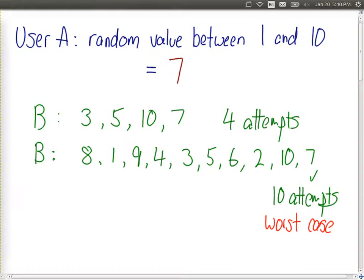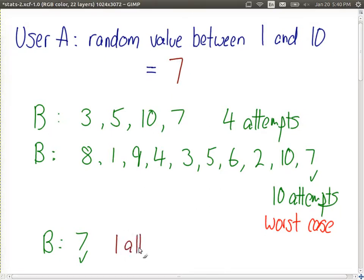Another scenario, maybe B chooses numbers in a different order again. Maybe the first number they choose is 7. In this case, they immediately get the correct answer. So in this case, we have one attempt, which is the best case. So the best case is when B chooses the value which A also chose.